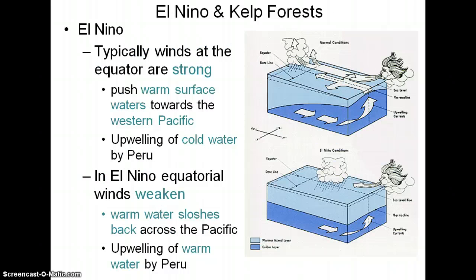El Niño can actually be a problem for kelp forests. Typically at the equator, very strong winds push warm surface water towards the western Pacific — over by the Indo-Pacific, Australia, Indonesia. Because of that, you actually have upwelling of cold water by Peru. But in El Niño, those normally constant winds weaken. Some of that warm water comes back across the Pacific, and you get warm water over by Peru.